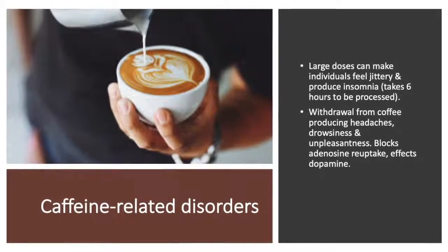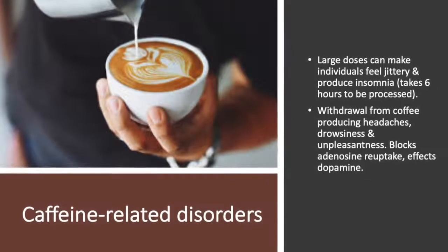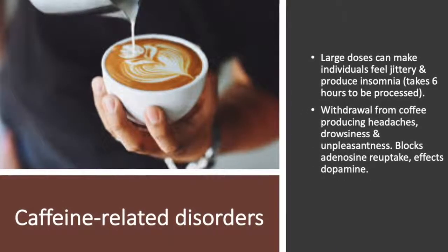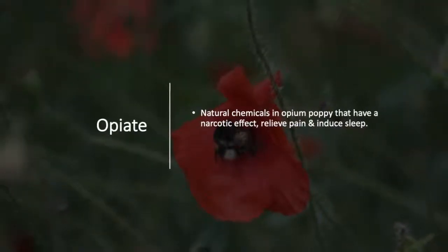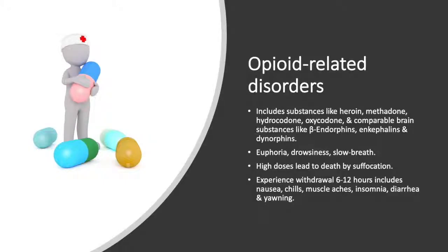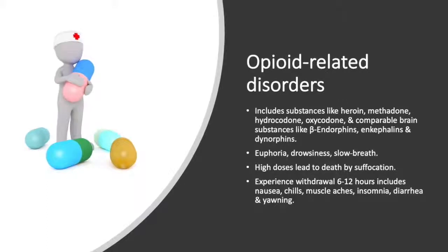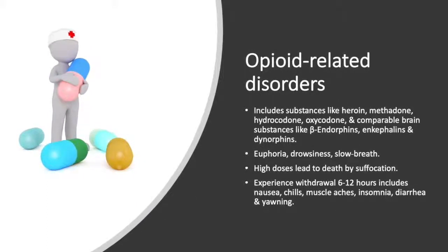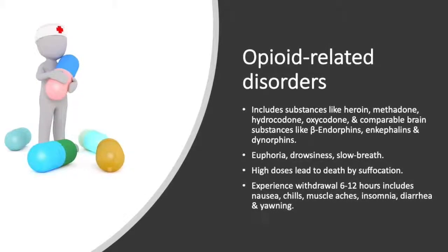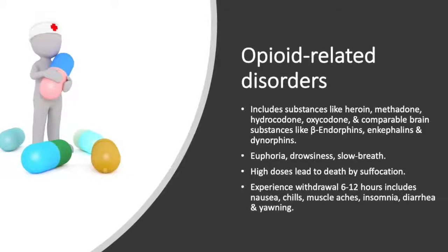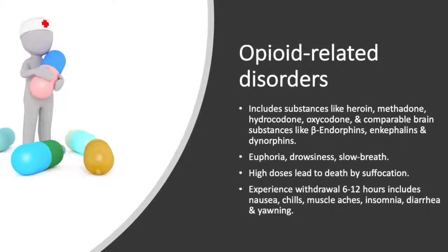Caffeine-related disorders exist when large doses make individuals feel jittery and produce insomnia, and it takes 6 hours to be processed. Withdrawal from coffee produces headaches, drowsiness, and unpleasantness. It blocks adenosine reuptake and affects dopamine. Opiates are natural chemicals in the opium poppy that have a narcotic effect by relieving pain and inducing sleep. Opioid-related disorders include the abuse of heroin, methadone, hydrocodone, oxycodone, and other substances like beta-endorphins, enkephalins, and dynorphins. Opioid-related disorders reduce euphoria and cause drowsiness and slow breathing. High doses lead to death by suffocation, and individuals experience withdrawal for 6 to 12 hours, with symptoms including nausea, chills, muscle aches, insomnia, diarrhea, and yawning.